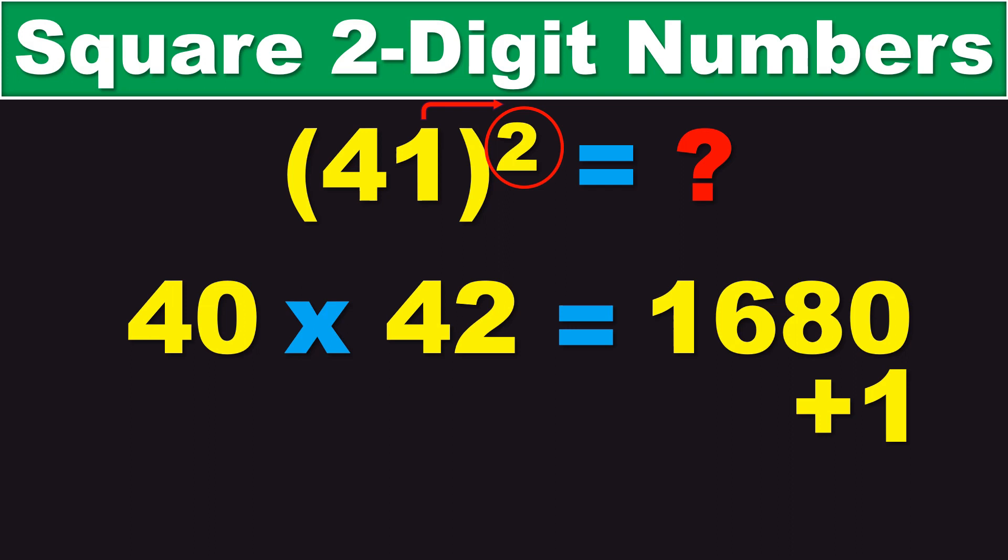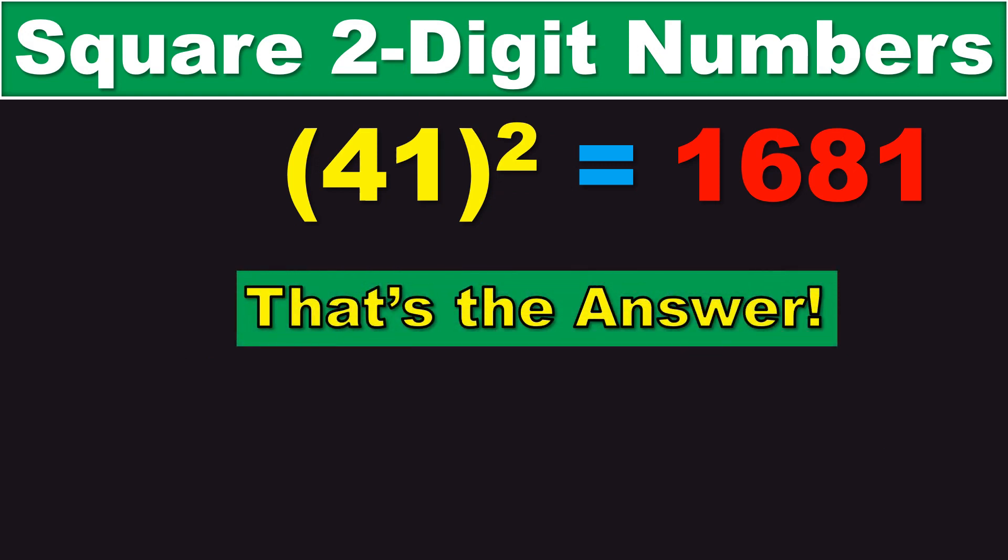And, then, all you have to do is add it to the product that we found earlier. So, that means that 1680 plus 1 is 1681. And, that is the answer to 41 squared.